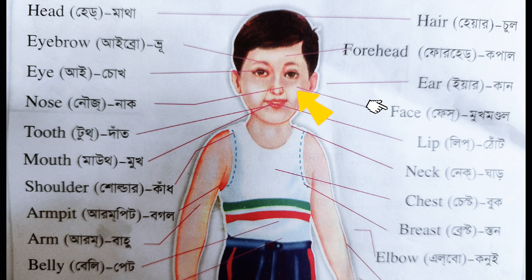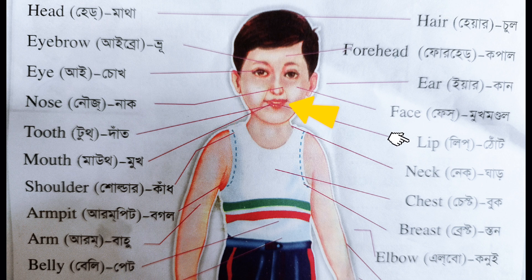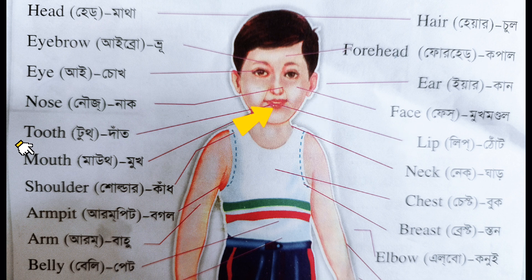Nose, Neck, Face, Teeth. Tooth — the Bangla meaning of Tooth is 'Dat'. Lip — the Bangla meaning of Lip is 'Thot'. Mouth — the Bangla meaning of Mouth is 'Mook'.